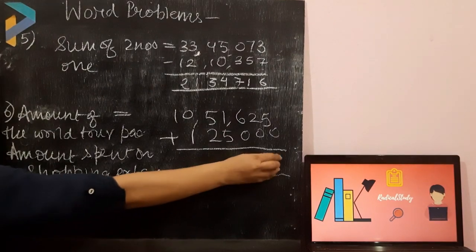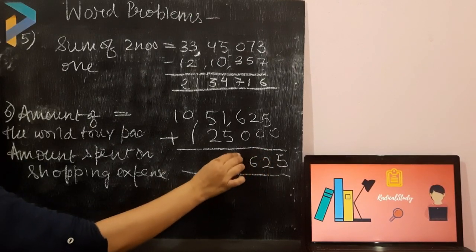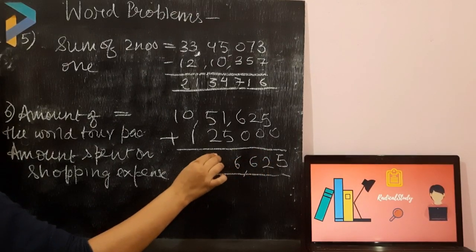I am adding 5 plus 0 is 5, 2 plus 0, 2, 6 plus 0, 6, 5 plus 1, 6, 5 plus 1, 6, 5 plus 2 is 7,